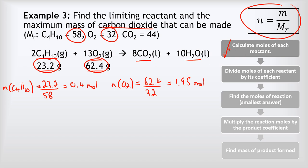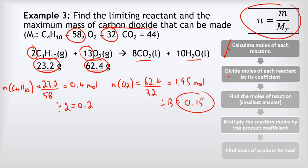Dividing by coefficients: for C4H10, the coefficient is two, so 0.4 / 2 = 0.2. For oxygen, the coefficient is 13, so 1.95 / 13 = 0.15. Since 0.15 is slightly smaller than 0.2, oxygen is the limiting reactant.